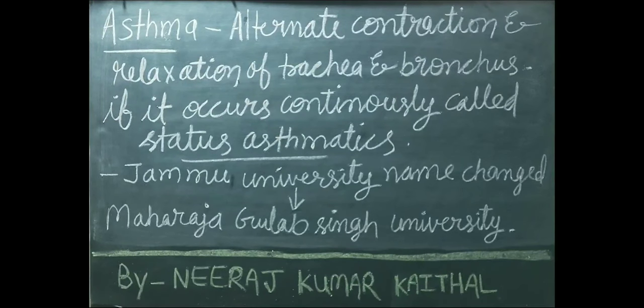Asthma is an alternate contraction and relaxation of trachea and bronchus. Asthma condition mein trachea aur bronchus ka alternate contraction aur relaxation hota hai. If it occurs continuously, it is called Status Asthmaticus. Agar yeh isthiti kaafi lambe samay tak rahe toh hum ise Status Asthmaticus kehte hain.